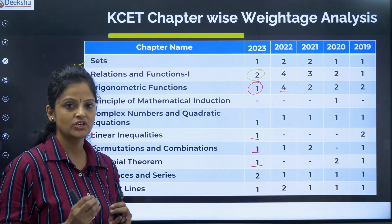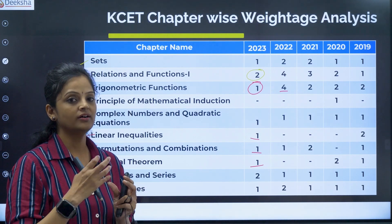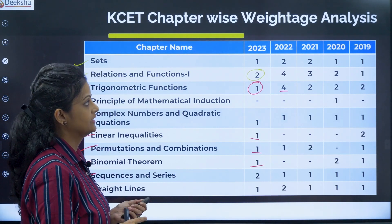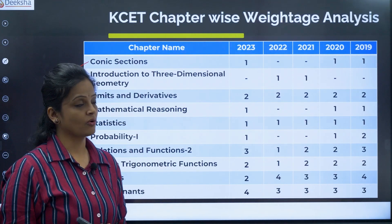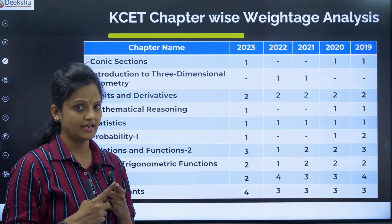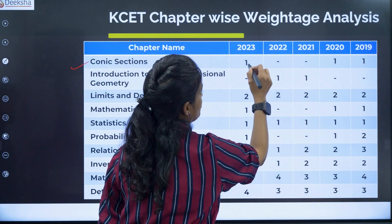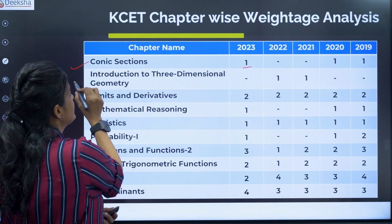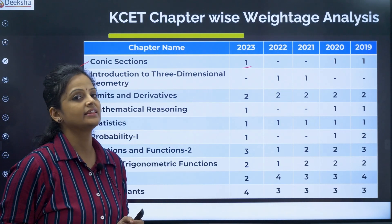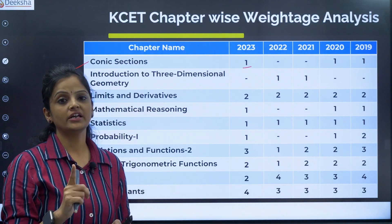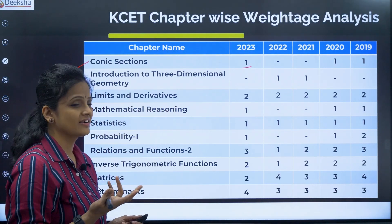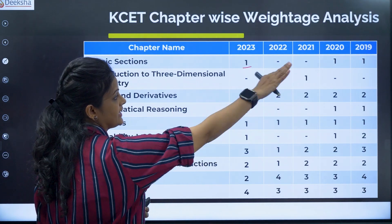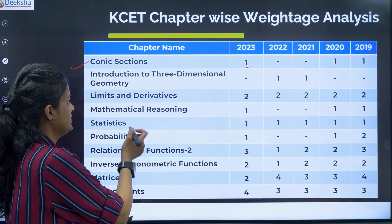Next is a very huge and very important topic — Straight Lines. It has a lot of concepts involved, but even so, only one question will appear from that chapter. Conic Sections is a first PUC topic covering circles, parabola, ellipse, and hyperbola, but the analysis shows only one question from that chapter. Introduction to Three-Dimensional Geometry has good weightage in second year, but in first PUC, with hardly just the distance formula and section formula, you can neglect that first PUC 3D geometry chapter.